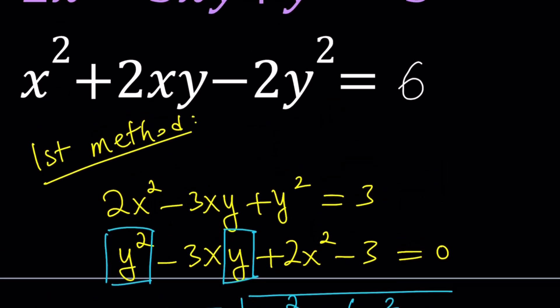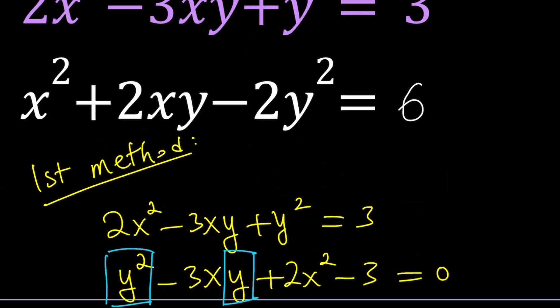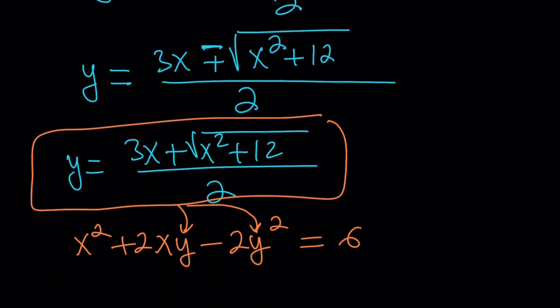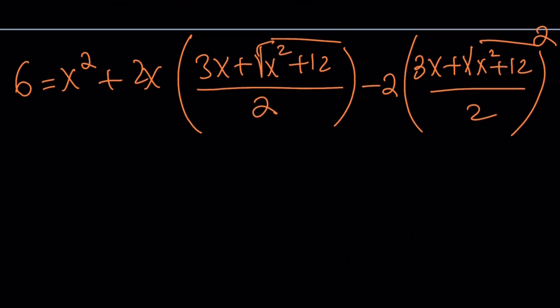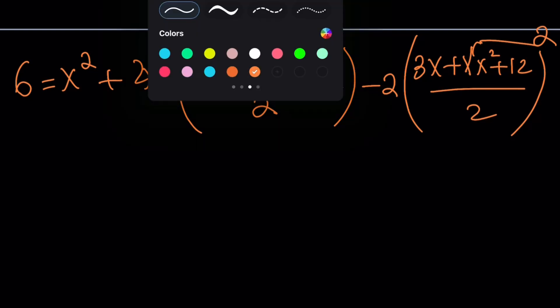So hopefully the idea was clear. Obviously with the first method you could also isolate x² or y² from the second equation and then plug it into the first equation. It wouldn't matter. It would end up being the same level of complexity with all these radicals all over the place. So that's not a very nice method to be honest but it is a method. That's why I'm presenting it.